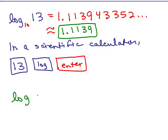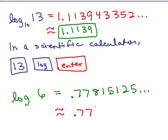Try this one in your calculator. How about the log of 6? See what you get. In my calculator, I get 0.77815125, that really goes on and on. If I go to 4 decimal places again, this would be 0.7782.